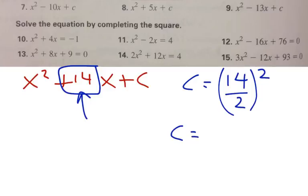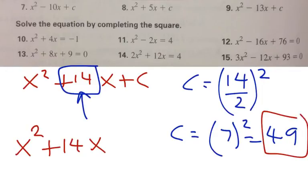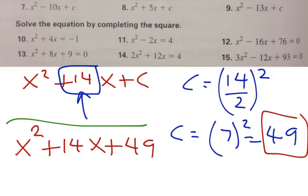So in my case, C will be 14 divided by 2, which is 7, to the second power — that's 49. So my new trinomial is going to be x squared plus 14x plus 49. This expression is called a perfect square trinomial.